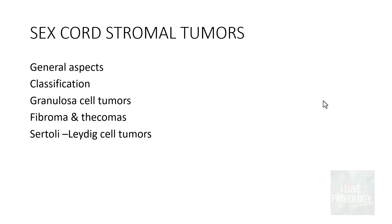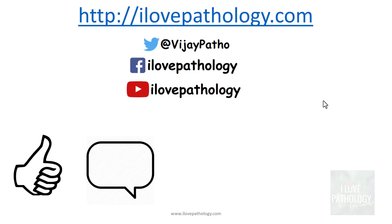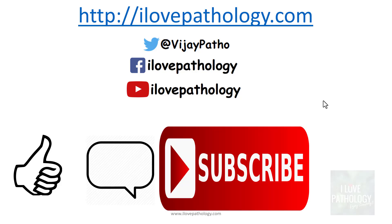That covers the sex cord stromal tumours. We looked into what sex cords are, understood the classification, and discussed the important tumours: granulosa cell tumours, fibromas, thecomas, and Sertoli-Leydig cell tumours. Thank you for watching. Do comment if you have any queries, as your comments motivate me to produce more videos. Please subscribe if you find this video useful and share if you feel it is worth sharing.